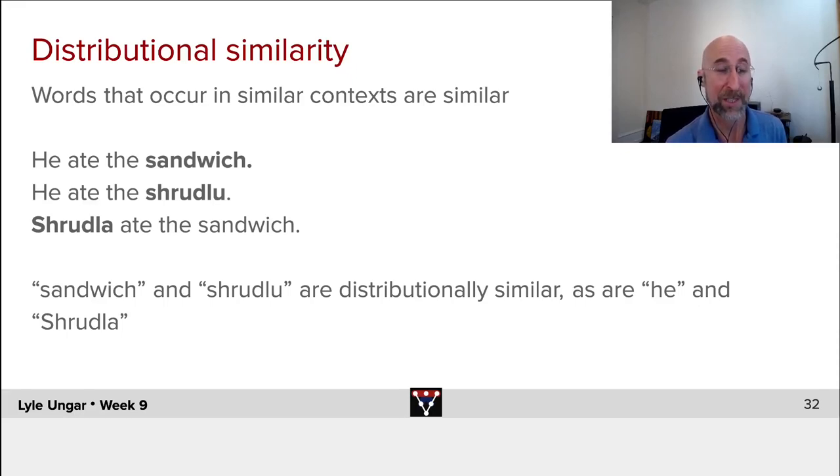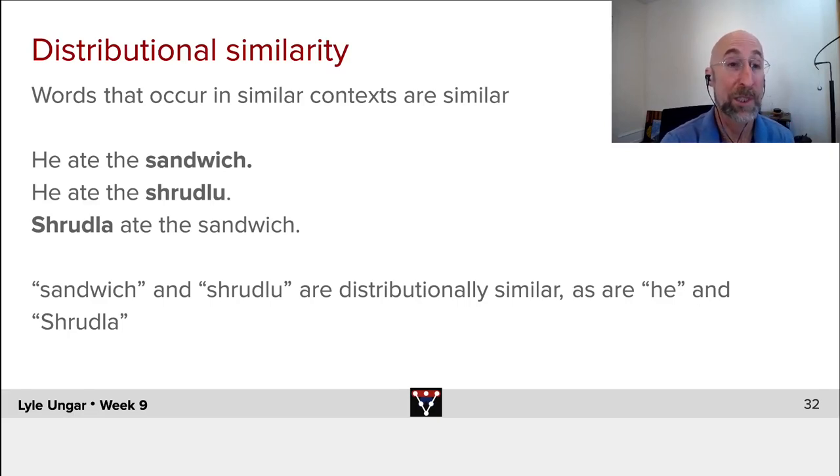It will look similar to other things like meatloaf or noodles or dosas that show up after ate the. So note that words which are distributionally similar tend to be similar, not just in terms of part of speech, like being a noun, but also similar in terms of being something that can be eaten or something that can eat. And we will use this over and over this week and next week.